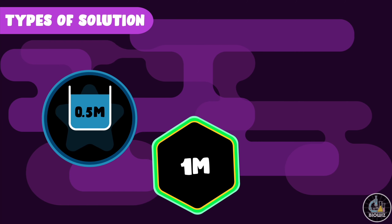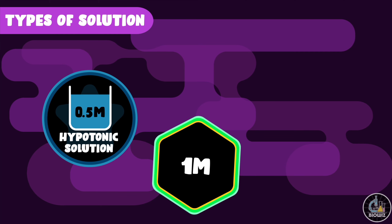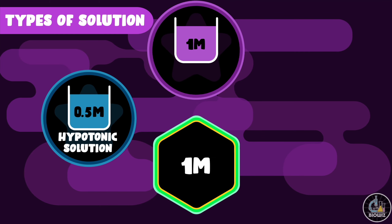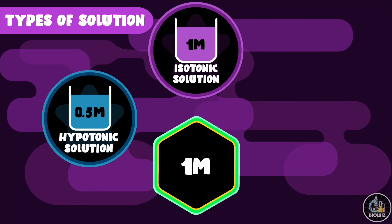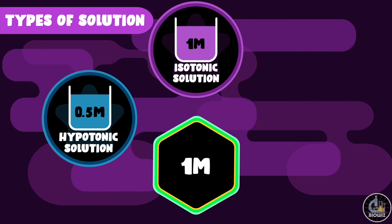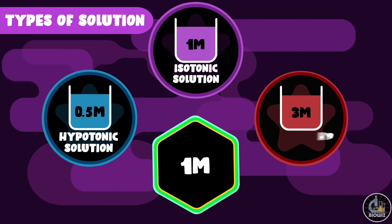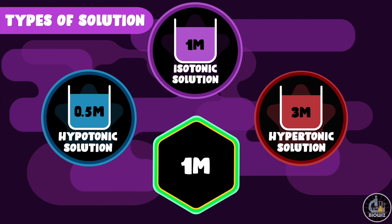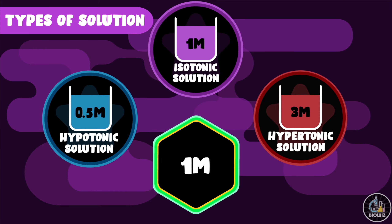Now compared with the cell concentration, if a solution has relatively less concentration then it is called a hypotonic solution. If the concentration of the solution is the same as that of the cell concentration then it is called an isotonic solution. And if the concentration of the solution is relatively higher than the cell concentration then it is called a hypertonic solution.